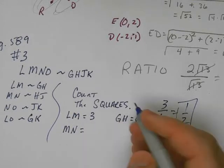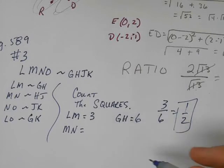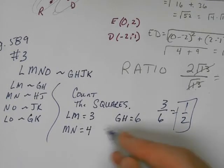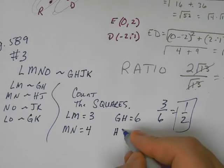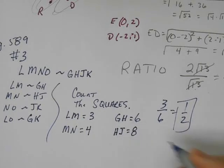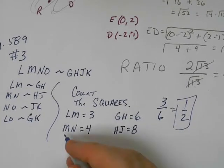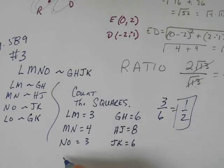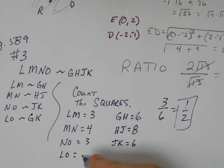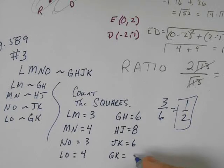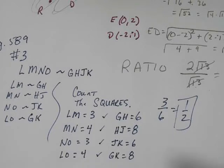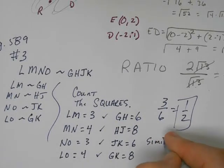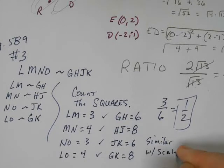Okay, so now let's confirm the other three sides. We can go through it fairly quickly. What's the length of MN, Chas? Just count the squares. And what's the length of HJ, Chas? Better be 8. Is it? Okay. Poff, what's the length of NO? And what's the length of JK? Jordan, what's the length of LO? And GK?